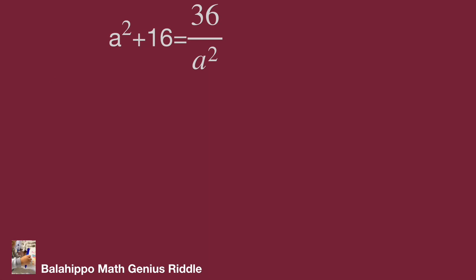Multiply both sides of the equation by a² to get a new equation. Then move 36 to the left side of the equation.